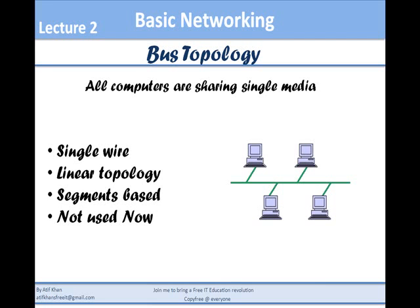The computers are sharing single media. The problem here is that whenever any segment of cable from anywhere gets cut off, the whole network will go down — just because of the non-availability of N-terminators, which we'll discuss in the next slide. This is the biggest drawback of this topology.